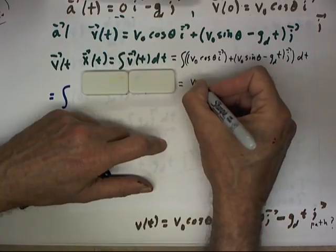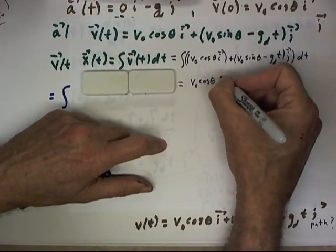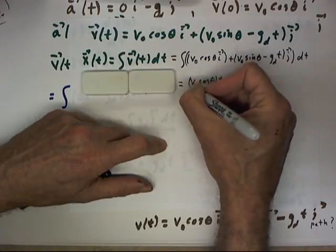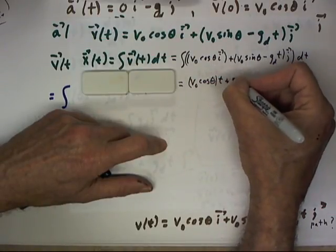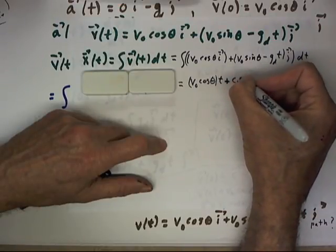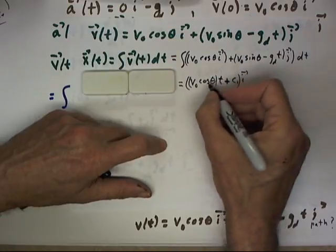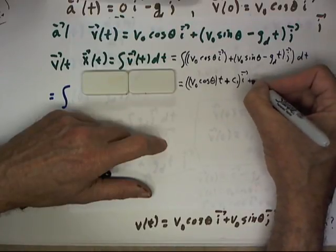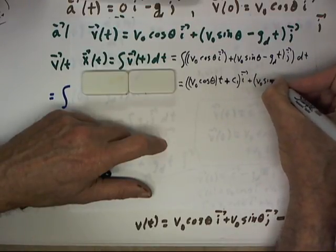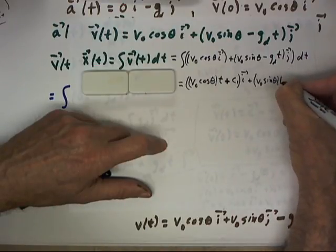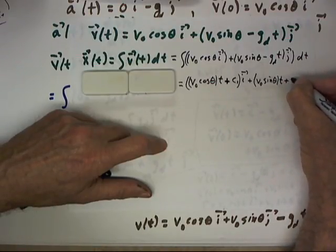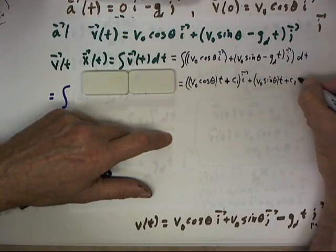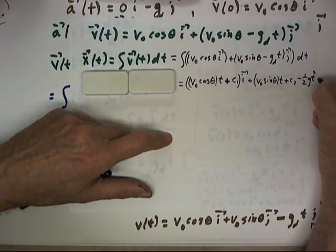This integral is v0 cosine theta, and I left out the cosine theta in my hurry to write the t. So there's our anti-derivative with our integration constant. And our anti-derivative over here is going to be just v0 cosine theta times t plus c2, probably should have tacked that on at the end because I've still got to integrate this, minus one-half g t squared times j.